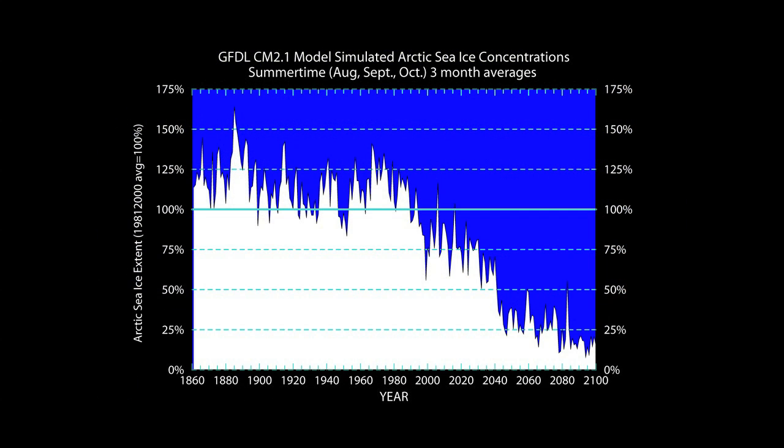This graph shows that the modeled summertime Arctic sea ice extent — the size of the area covered by sea ice — does not vary smoothly in time. There is a good deal of year-to-year variability superimposed on the long-term downward trend.